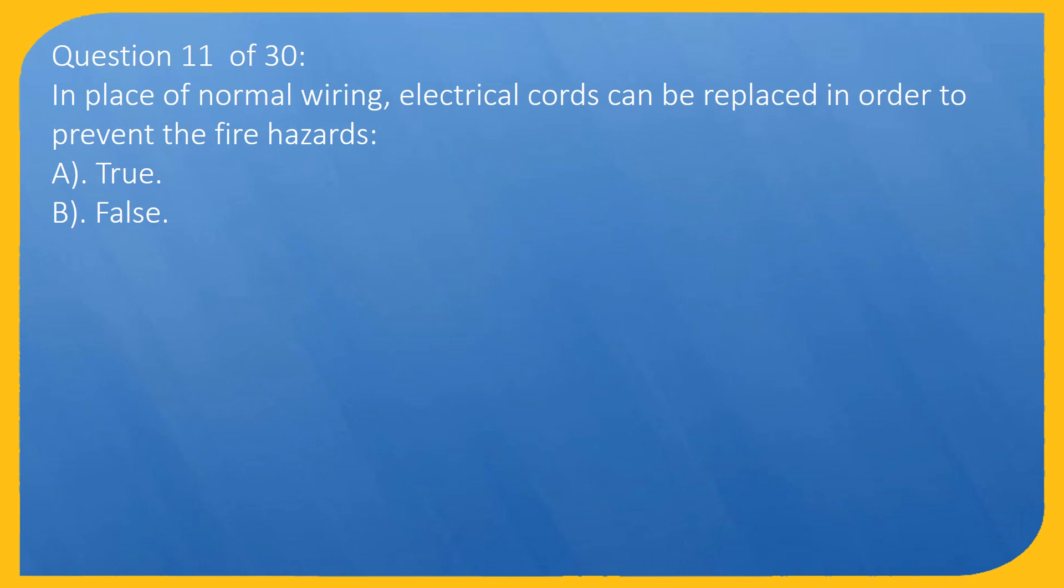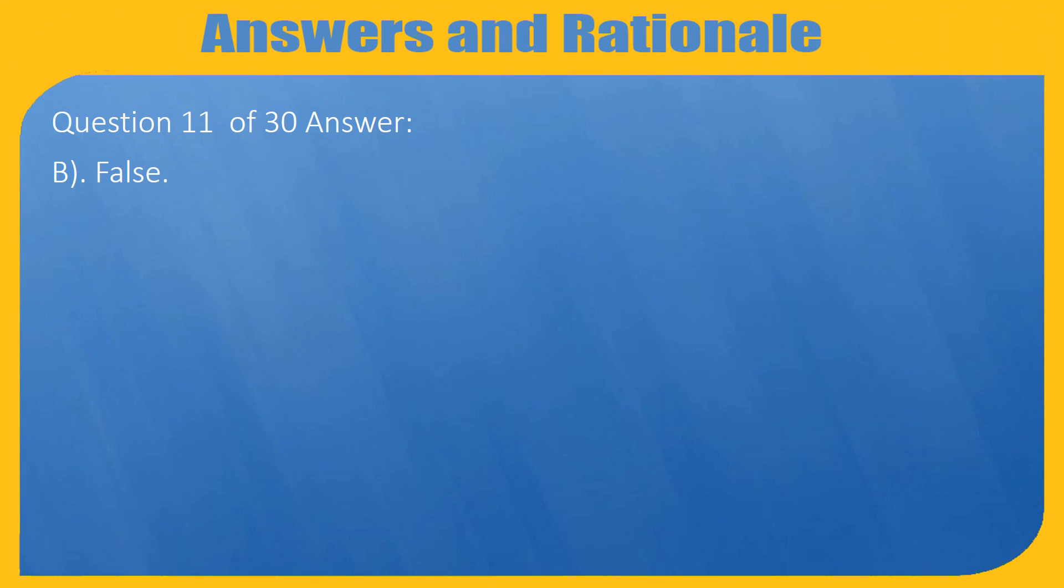Question 11 of 30: In place of normal wiring, electrical cords can be replaced in order to prevent the fire hazards. A. True, B. False. Answer: B. False.